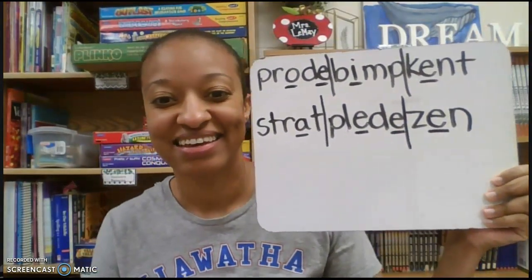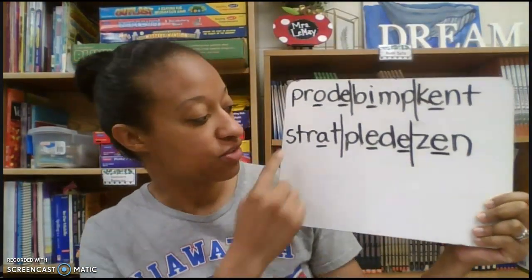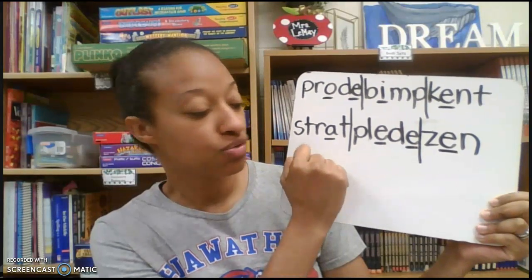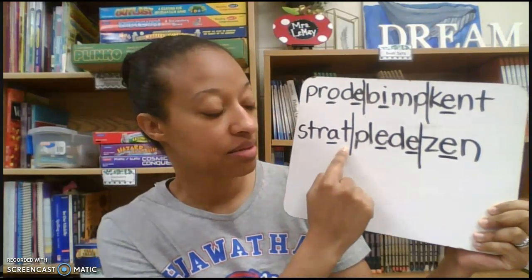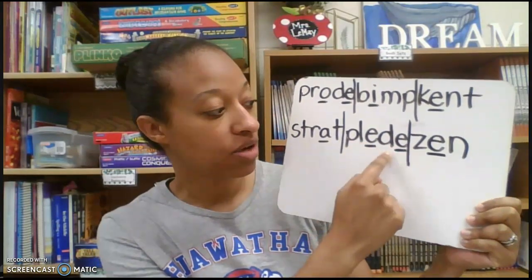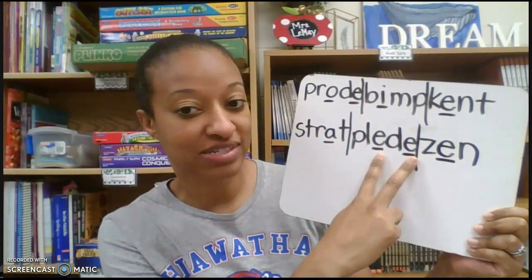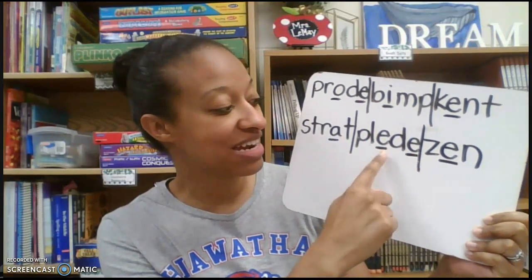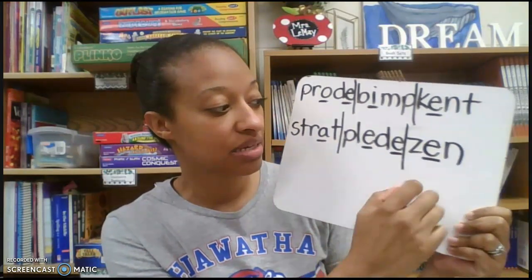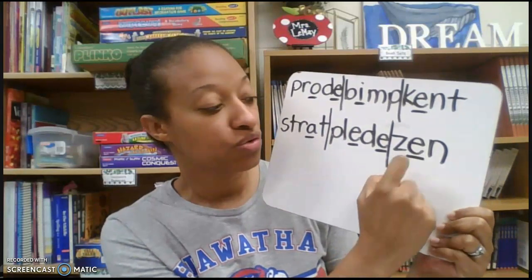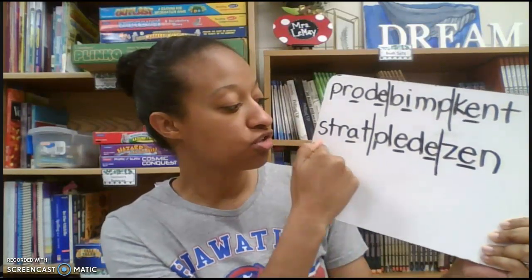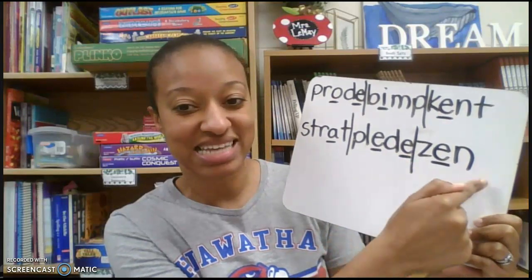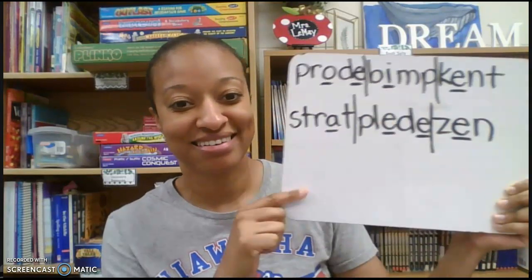Okay, it should look like this. Let's look at our first syllable — it is closed: A-S-T-R-A-T. Vowel consonant E — long vowel silent E pattern: E-P-L-E-D. Closed: E-Z-N. Whole word: Strat-Plead-ZN.